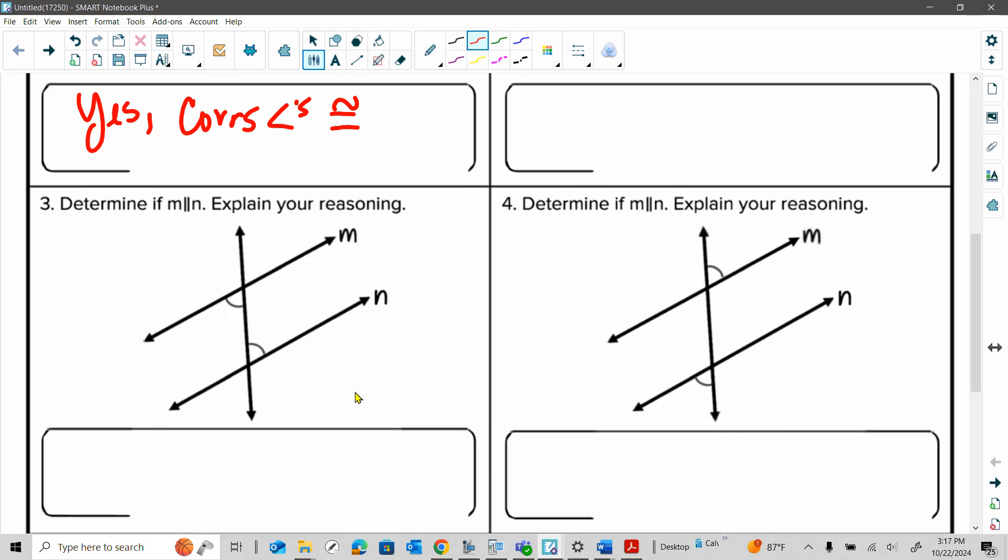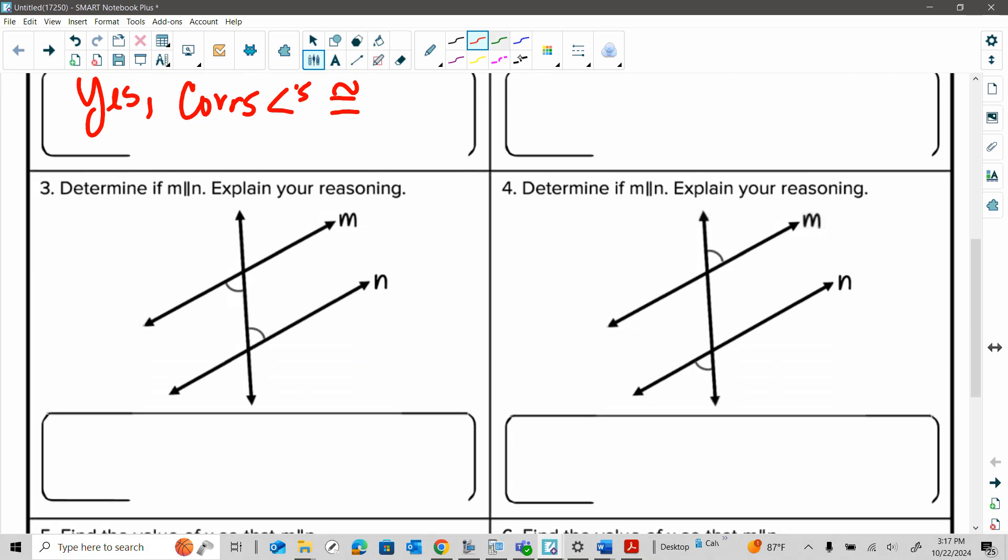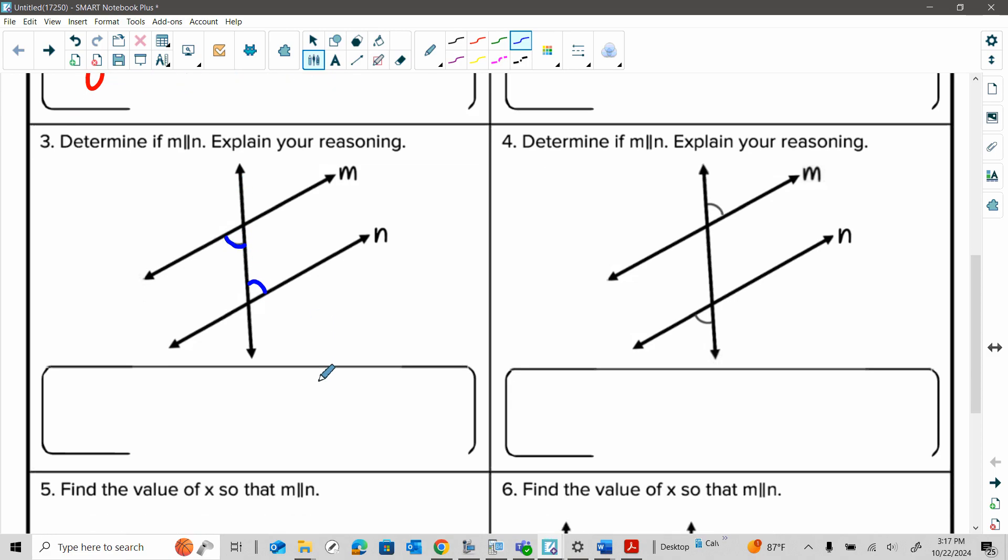This is kind of like similar to one through four on the notes. Here's another example, like three. You just got to really focus on the angle, the arcs, what type of angle pair you have. If you look, these are on opposite sides of this transversal here. So if it's opposite and they're congruent here, this also is a yes because we have alternate interior angles congruent.